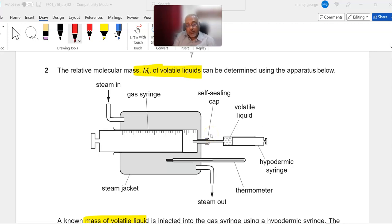The question talks about how to find the molecular mass of a particular compound. The experiment gives all the instructions of what the procedure was. If you notice carefully, there is a volatile liquid here in this syringe which is going to be injected into this bigger syringe.